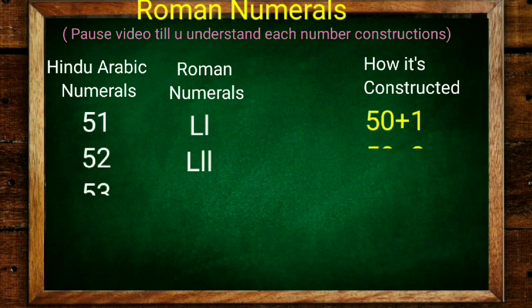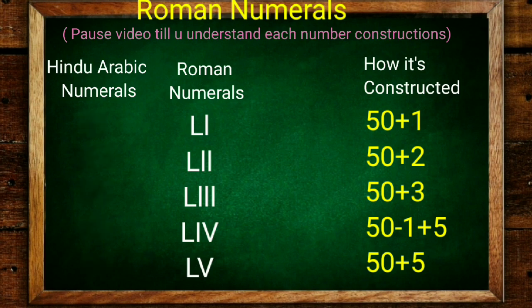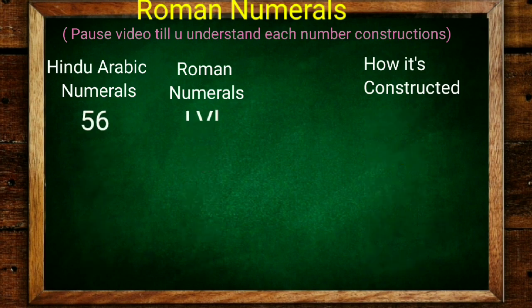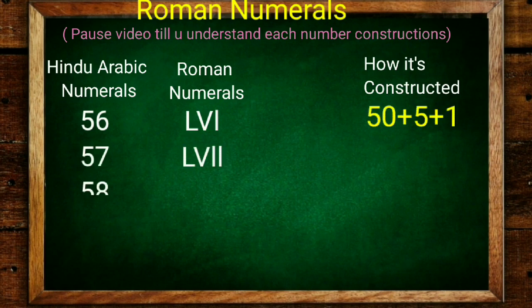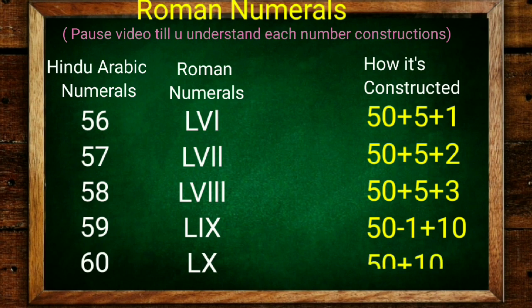Now 51 is L plus 1, 52 is L plus 1 plus 1, 53 is L plus 1 plus 1 plus 1. 54 is L minus 1 is 49 plus 5, and 55 is L plus 5. Please pause the video till you understand each number construction. 56 is 50 plus 5 plus 1, 57, 58. 59 is 50 minus 1 is 49 plus 10, and 60 is 50 plus 10.